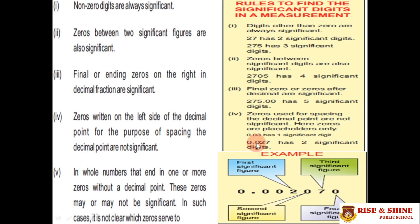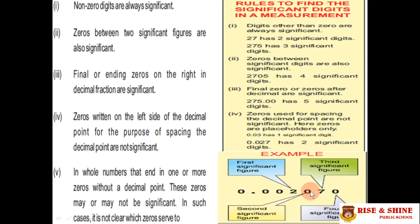Consider the value 0.002070. The first three zeros are not significant according to rule number four. However, 2, 0, 7, and the final 0 — these four digits are significant: 2 is the first significant figure; the zero between 2 and 7 is significant according to rule two; 7 is also significant; and the ending zero is significant according to rule three.